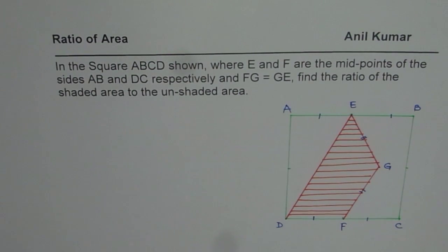I am Anil Kumar and we will explore area for the given figure. The question here is, in the square ABCD shown, where E and F are the midpoints of the sides AB and DC respectively, and FG equals to GE, find the ratio of the shaded area to the unshaded area.